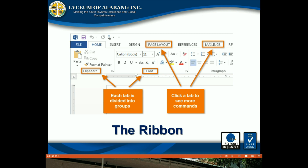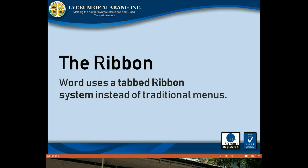The Ribbon contains all of the commands you need to perform common tasks in Word. It uses a tab ribbon system instead of traditional menus, with multiple tabs, each with several groups of commands. You will use these tabs to perform the most common tasks in Word.